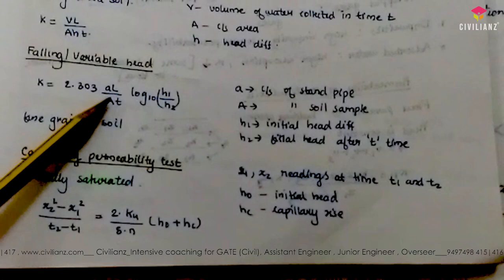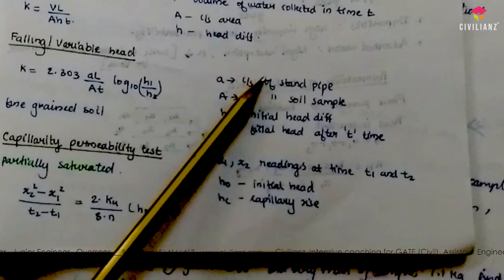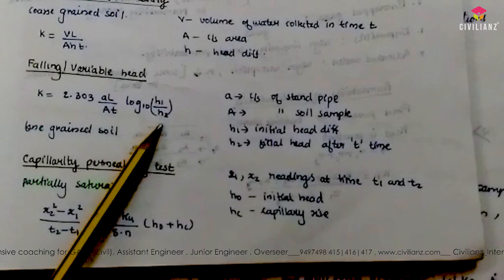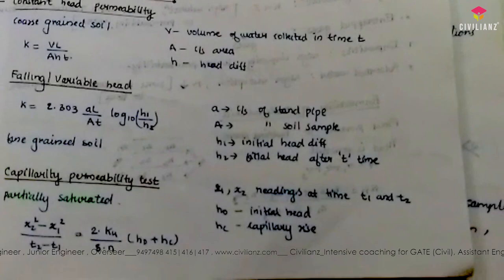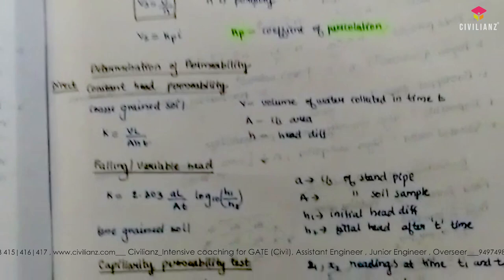For the variable head (falling head) permeability test: k = 2.303 · (aL) / (A·t) · log₁₀(h₁/h₂), where small a is the area of cross-section of the standpipe, capital A is the area of cross-section of the soil sample, h₁ is the initial height, h₂ is the final height, and t is the elapsed time. The capillarity permeability test is used for partially saturated soils.